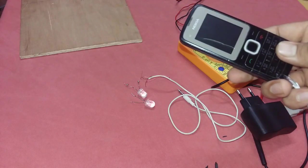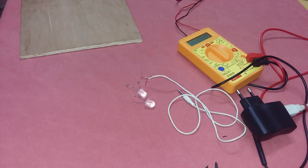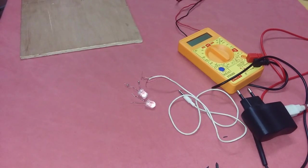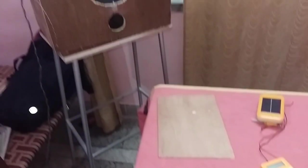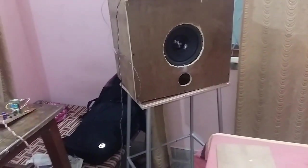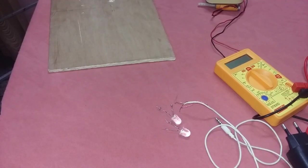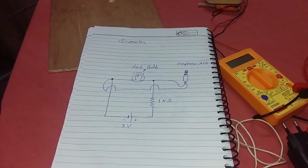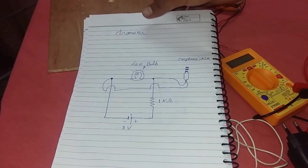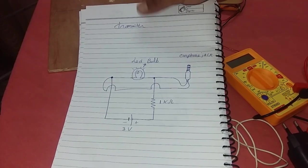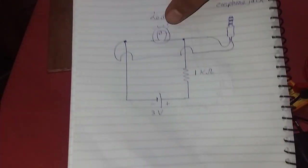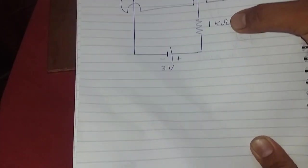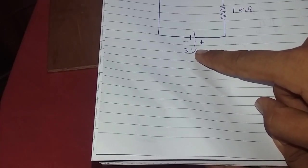Let's see the circuit diagram. This is a circuit diagram for the transmitter side. Here you see the LED bulb, earphone jack, 1 kilohm 3 watt, or you can use 5 volt also.